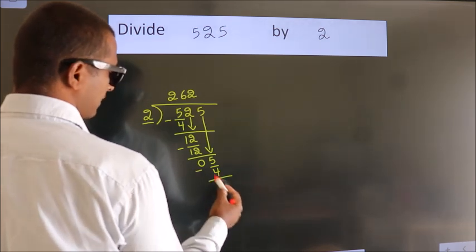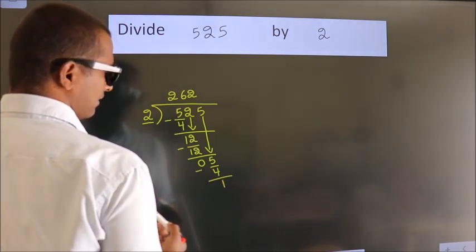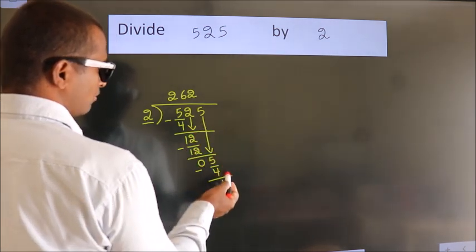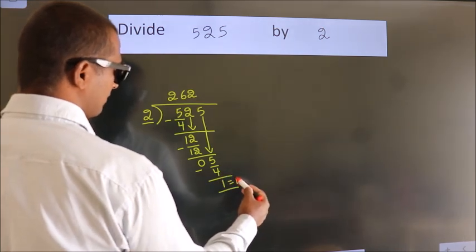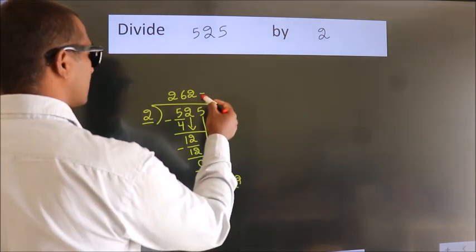Now, we subtract. We get 1. No more numbers to bring it down. So, we stop here. This is our remainder. This is our quotient.